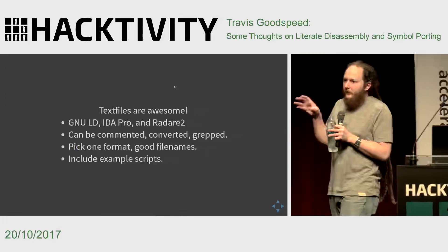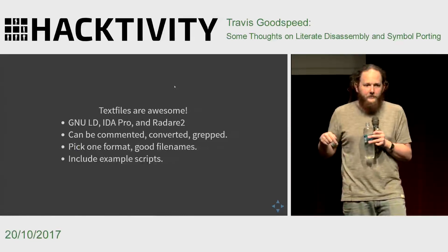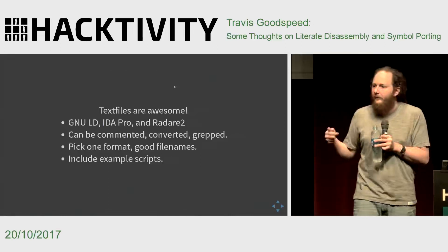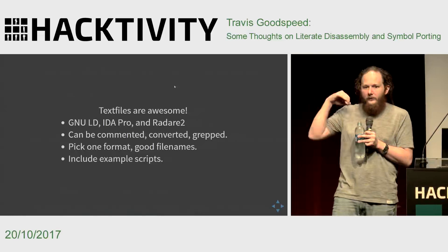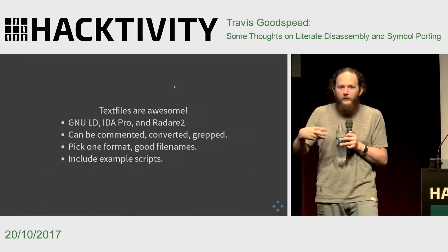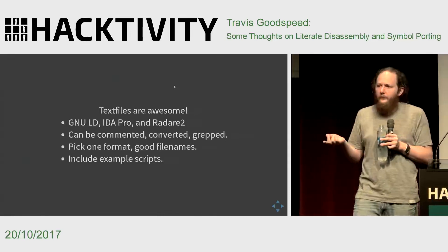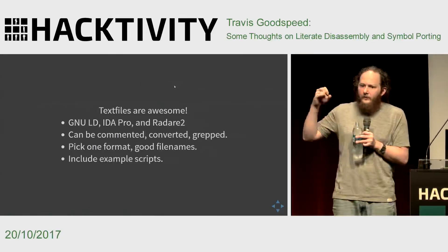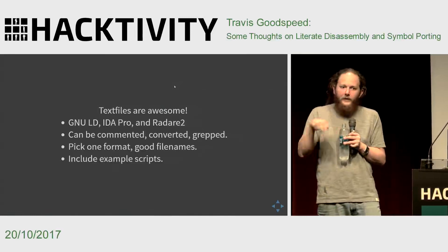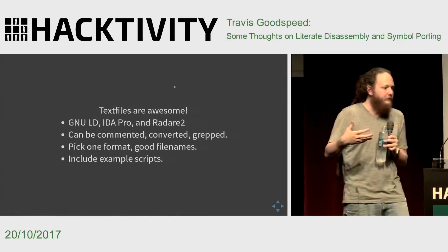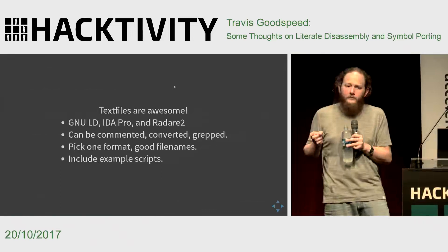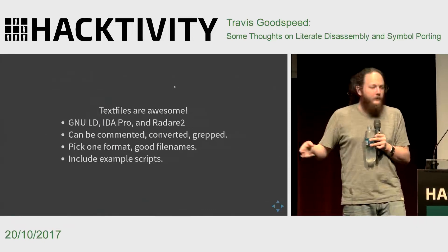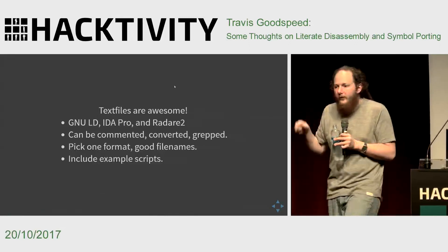The best thing about text files is that they're already supported by all of the major reverse engineering tools, and you can convert them by shell script. GNU-LD is nice because it can be directly used by the linker — as you're patching code, you can automatically throw all of those symbols in and then call the function as if it were a regular function. IDA Pro and Radare2 have their own formats. What I particularly like about Radare2's is that because they're the same as the command line, you can paste them into an active session and immediately have those symbols available. You should pick one file format and give it good file names from the very beginning, in the same way that you would organize a programming project. You can then import only the symbols from the region that you care about.